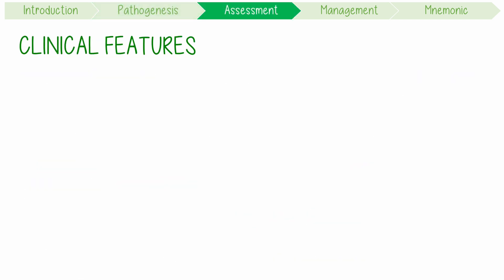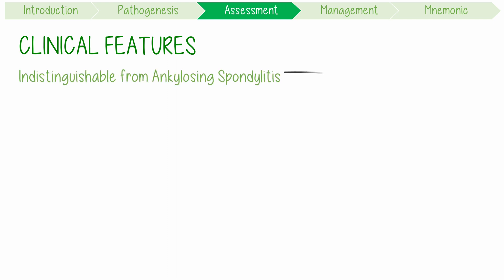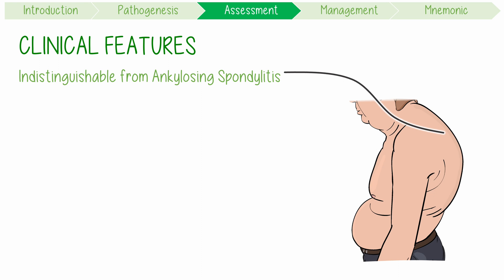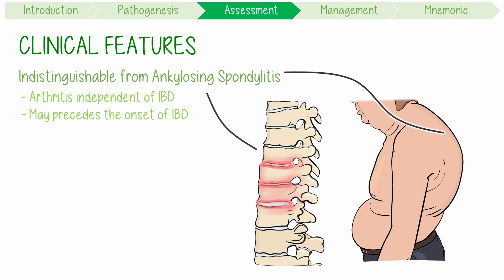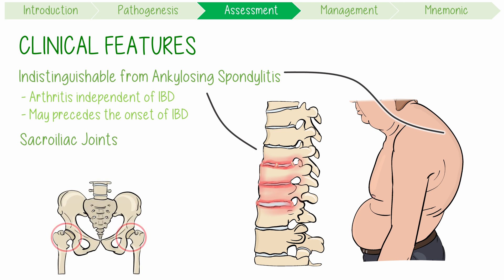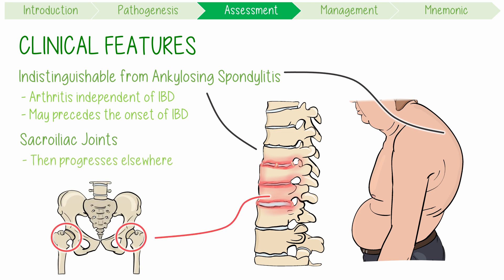The clinical features of enteric arthritis are indistinguishable from those of ankylosing spondylitis, its PAIR sister disease. Interestingly, this arthritis runs a course independent of the bowel disease, and in some patients it might even precede the onset of IBD. The arthritis usually affects the sacroiliac joints first and then progresses to other areas of the spine.